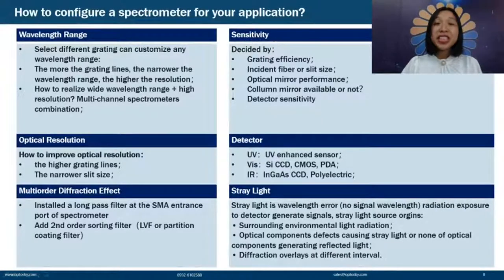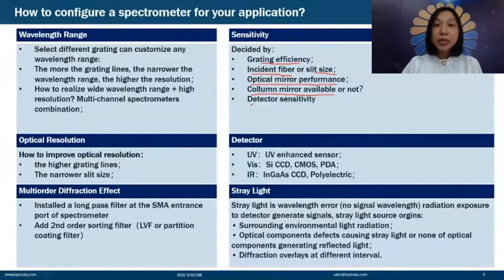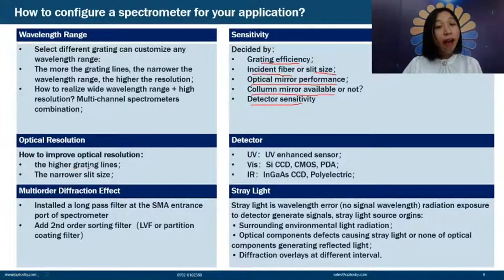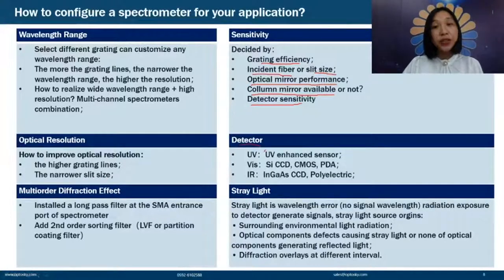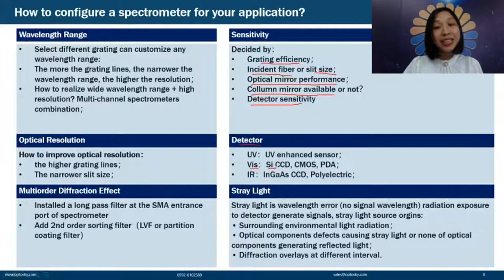Second is sensitivity, which is decided by grating efficiency, incident fiber or slit size, optical mirror performance, whether a cylindrical mirror is available, and detector sensitivity. Third is optical resolution, which can be improved by using higher grating line density, a narrower slit, and by selecting different detectors — such as UV-enhanced sensors for UV range, silicon CCD/CMOS or PDA for visible, and InGaAs CCD or pyroelectric for infrared.